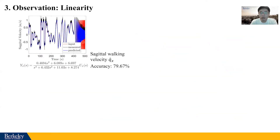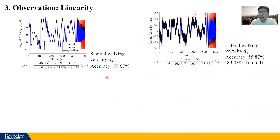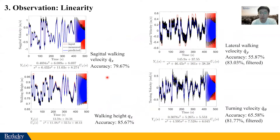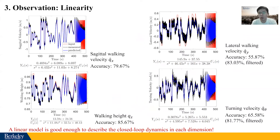Looking at the identification results: the red line is the system input, the black one is the robot output, and the blue line is the predicted result using the identified models. This shows quite good prediction accuracy. The same happens in other dimensions such as lateral walking velocity, walking height, and turning rate. We find that a linear model is good enough to describe the closed-loop dynamics in each dimension.